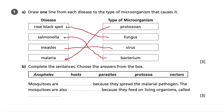Mosquitoes are vectors because they spread the malarial pathogen. It's important to realise that mosquitoes aren't hosts in that case — they are the vectors because they're spreading the malarial pathogen. That's a potential misconception that you can lose a mark for.